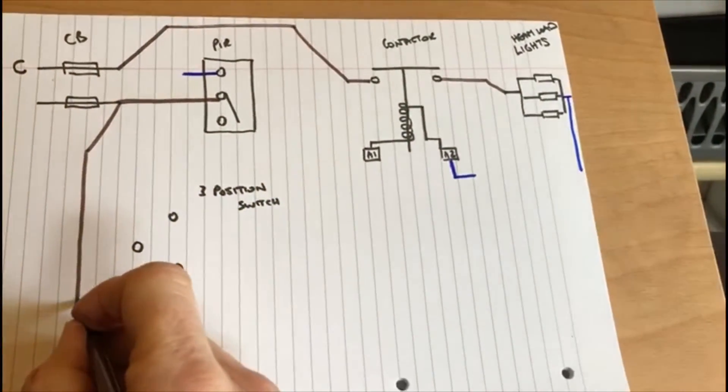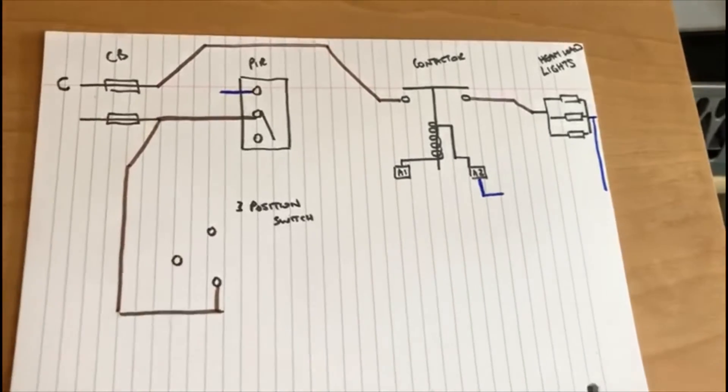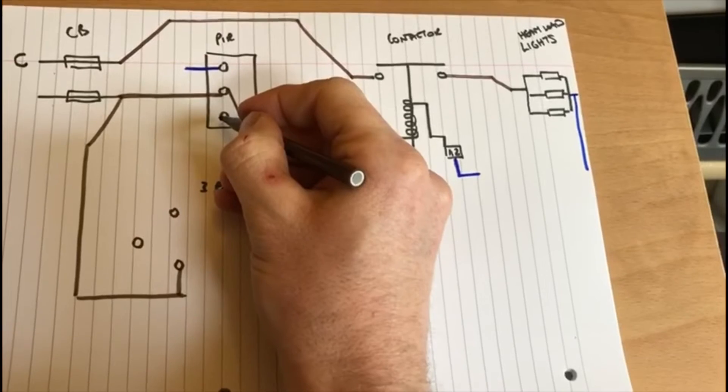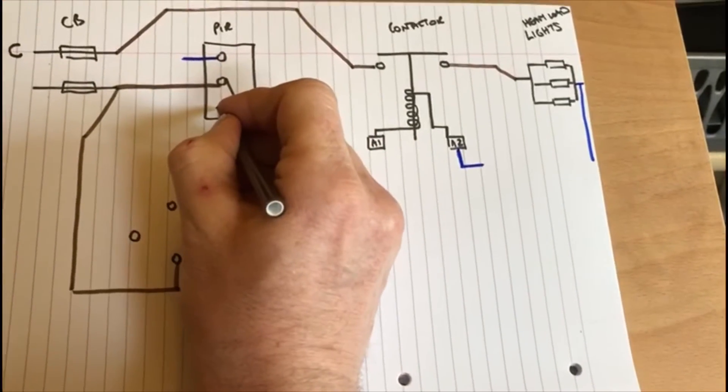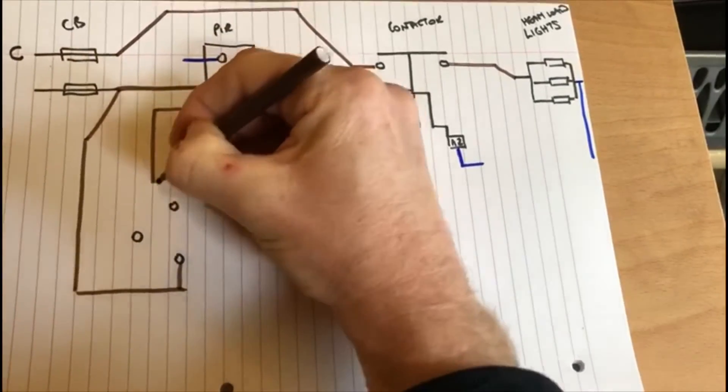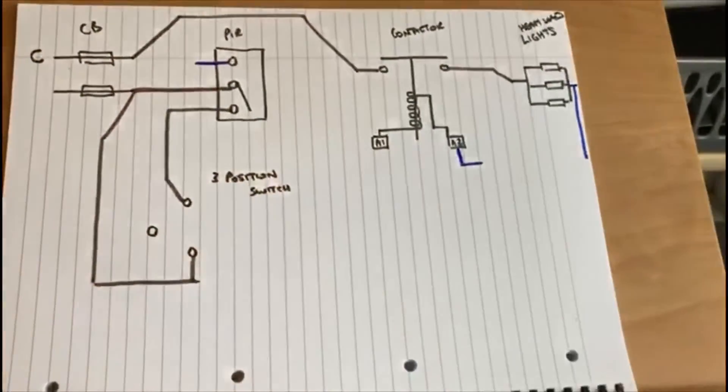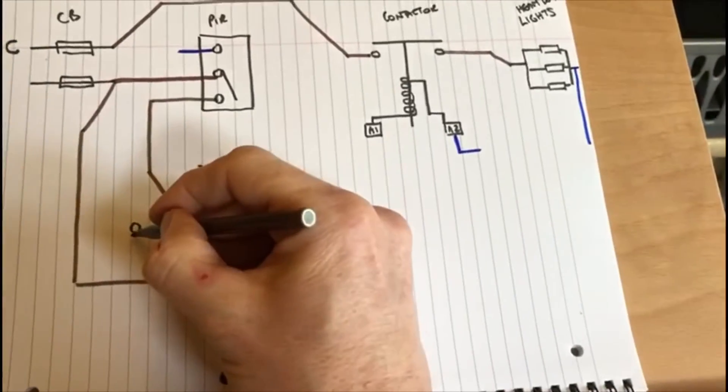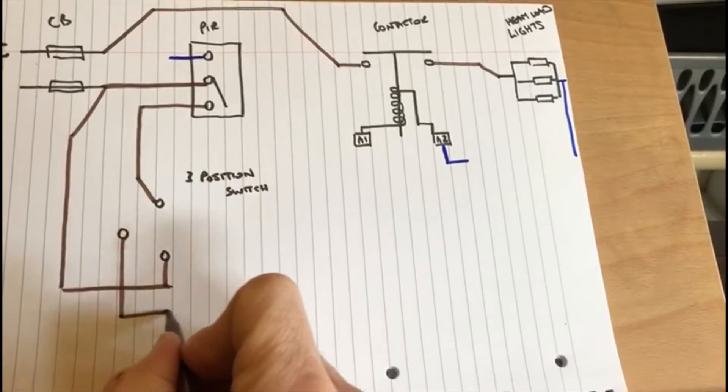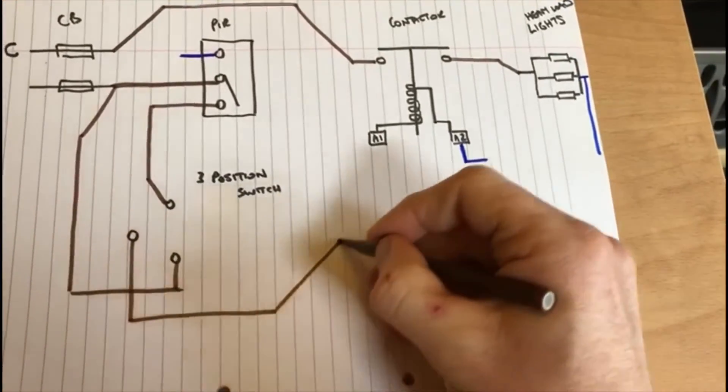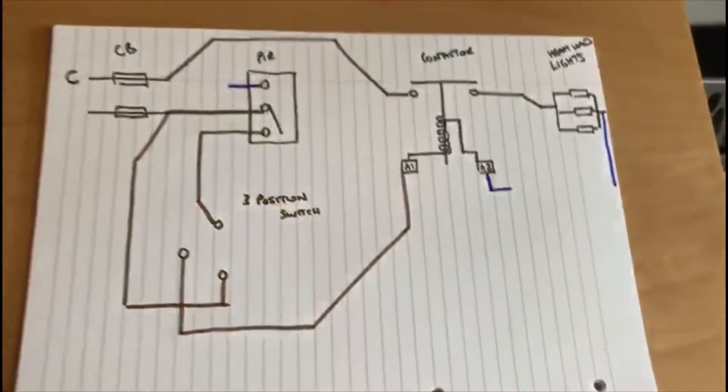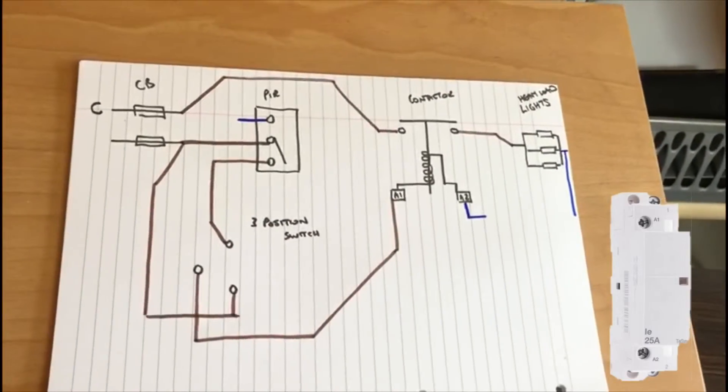Again there also needs to be a live, a switch feed coming down to the other side of the switch. And the middle switch here or the side of the middle connection then goes across to the coil.